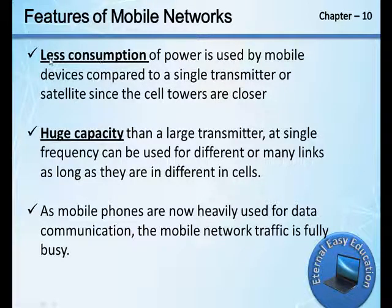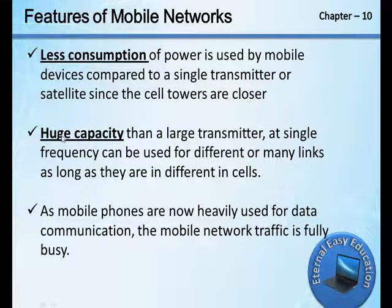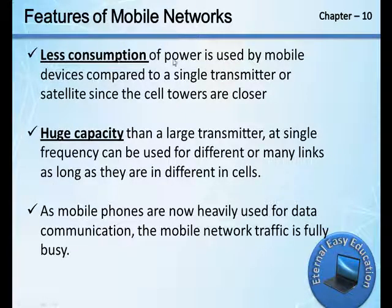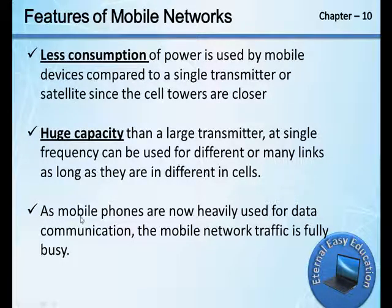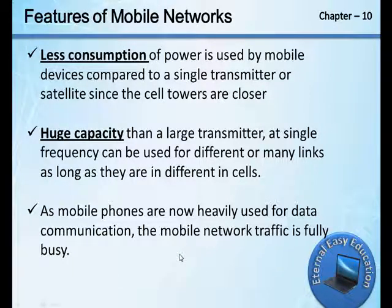Features of mobile networks: First, less power is consumed by mobile devices compared to a single transmitter or satellite, since the cell towers are closer. Second, huge capacity — a single frequency can be used for many links as long as they are in different cells. Third, it is able to transmit a large amount of data even as the mobile moves from one cell to another. As mobile phones are now heavily used for data communication, the mobile network traffic is often busy.